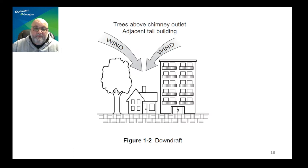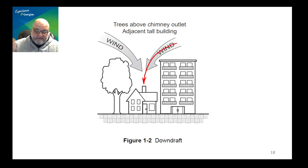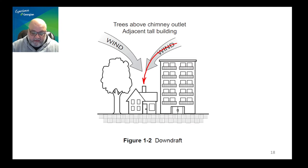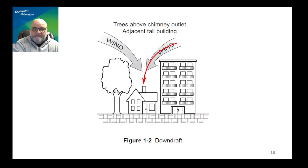Downdraft, according to the textbook, is an effect that comes from the wind force sending whatever is in the venting system downwards, instead of allowing heat to rise and draft to take flue gases out to the atmosphere. That's a dangerous situation. Draft hoods and draft control devices allow that downdraft to leave the venting system through the draft control device or draft hood into the surrounding area, as opposed to dropping down into the combustion chamber.